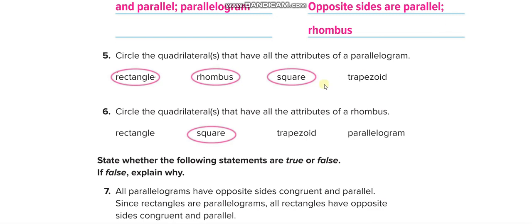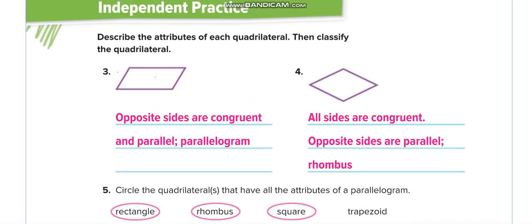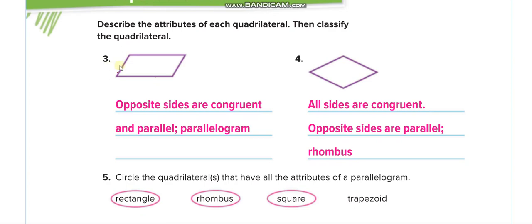Welcome back to Part 2 of Chapter 12, Lesson 5 on classifying quadrilaterals. Starting from question number 3: the opposite sides are parallel to each other but there are no right angles. If there were a right angle we'd call it a rectangle, but with no 90-degree angles it's a parallelogram. All sides are congruent but no right angle, so it's not a square — it's a rhombus. Write: all sides are congruent, opposite sides are parallel — rhombus.